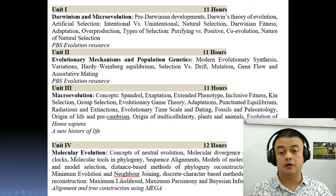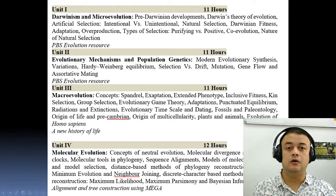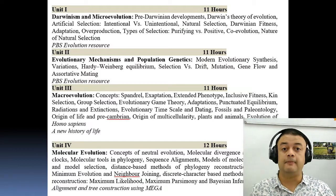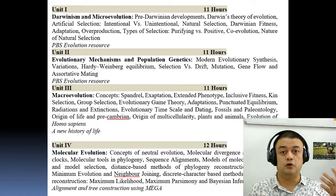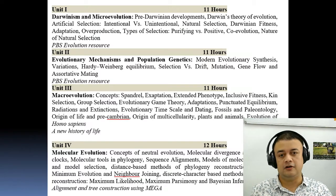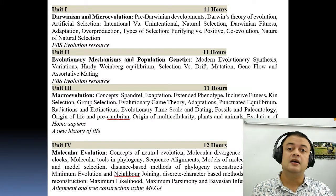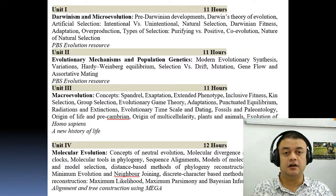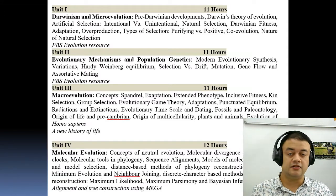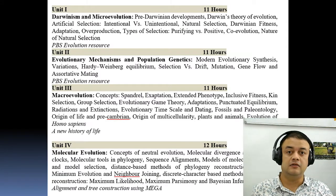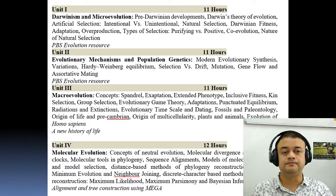And finally, the fourth unit is all about molecular evolution — how evolution happens at the DNA, protein, and nucleic acid level, and what are the phylogenetic tree reconstruction methods used to reconstruct evolutionary history.